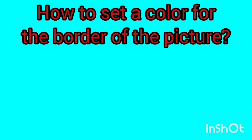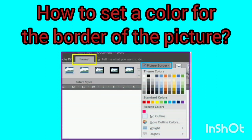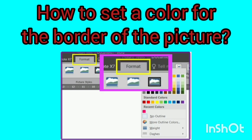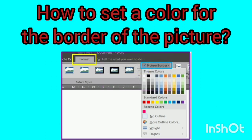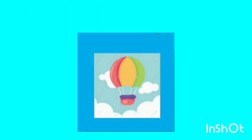We want to learn how to set a color for the border of the picture. Click on the desired photo once to select it. Then the Format tab marked with a yellow box will be activated automatically. Click on the Picture Border icon marked with a blue box and select the color of the border. I chose blue for my picture border. What color did you choose for your picture border? Write me in the comments.